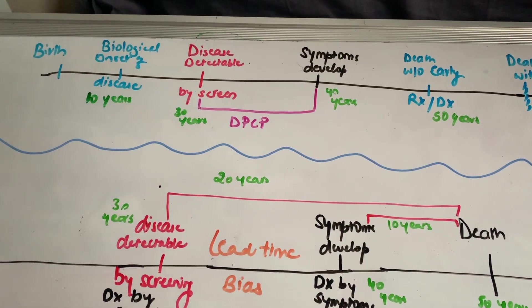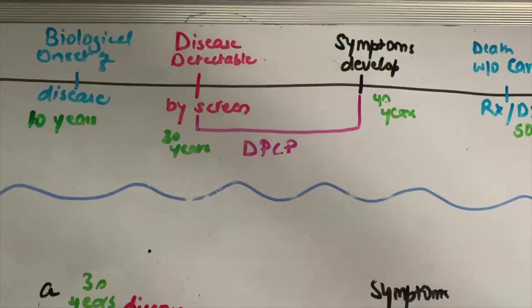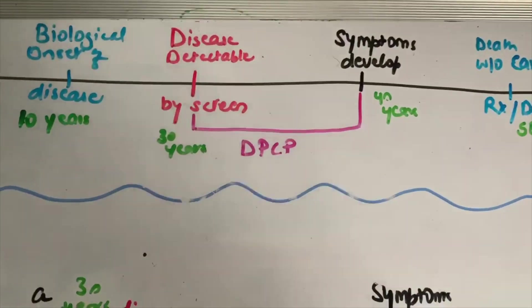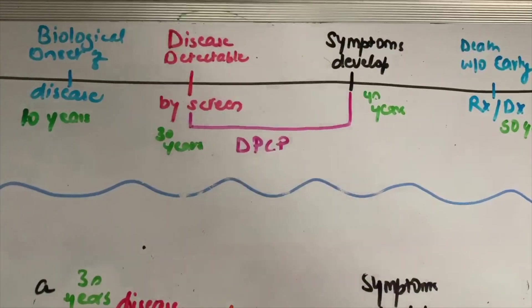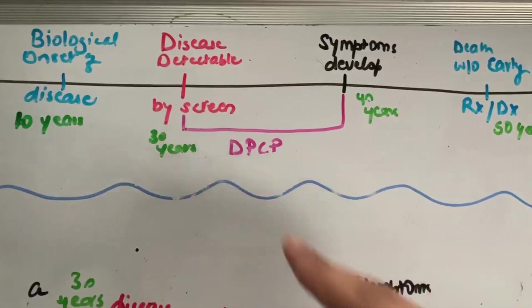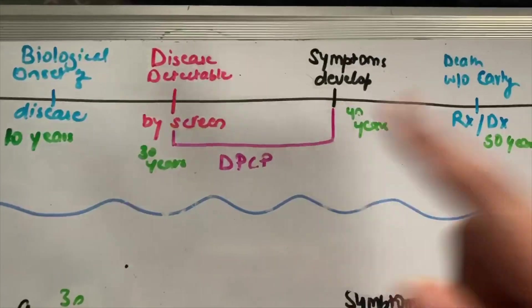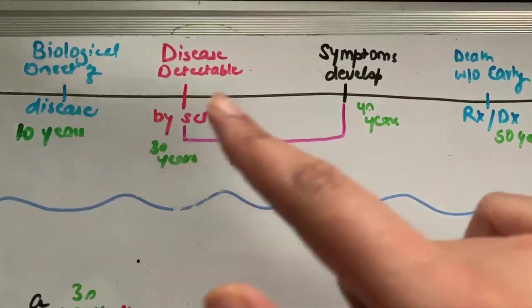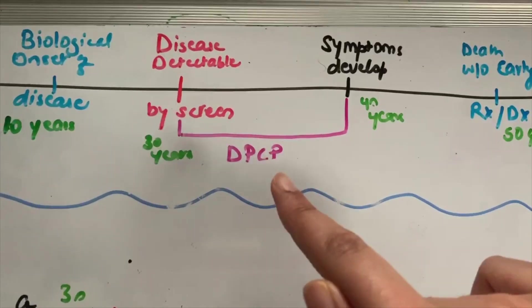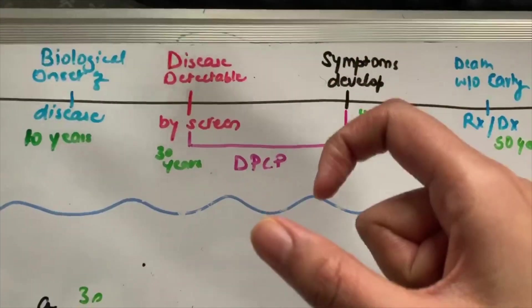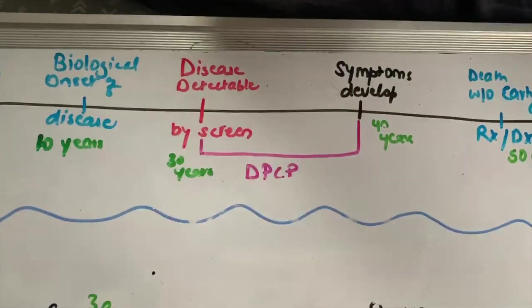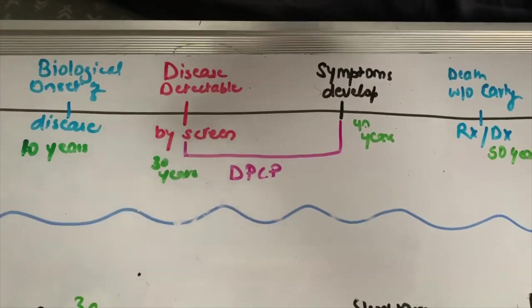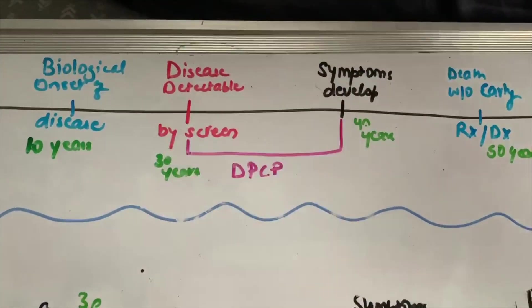So let's delve right into it. Before we can talk about the biases, I want to take your attention towards this little thing here. This is a DPCP, or the detectable pre-clinical phase, which is the time period after a disease becomes detectable by screening, like a chest x-ray or blood test, and before the symptoms for the disease develop.